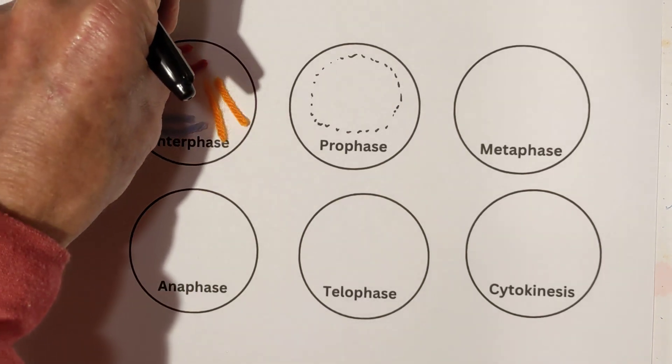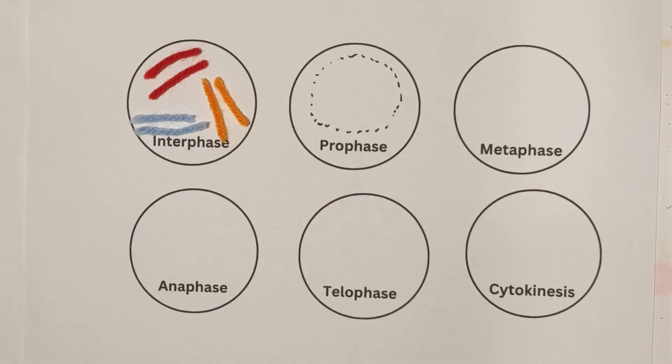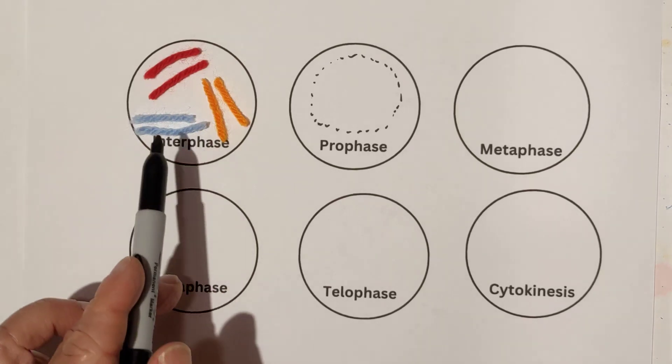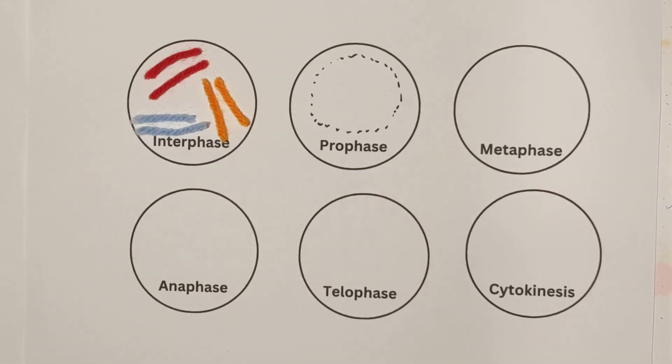And so here's what you have. And when these become chromosomes, these are sister chromatids. And they're exact copies of one another. And so now we're ready to move in to prophase.